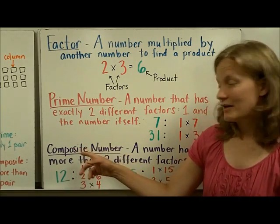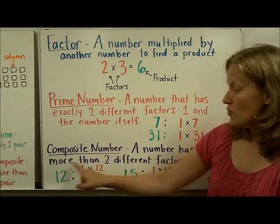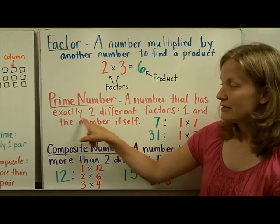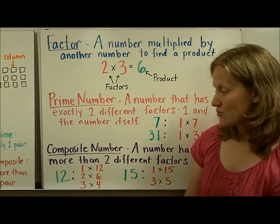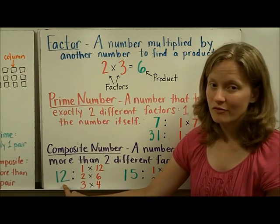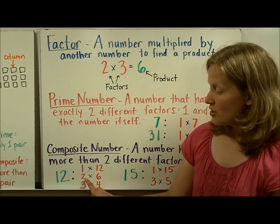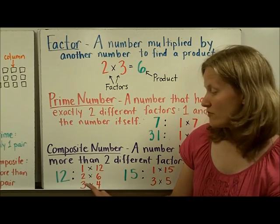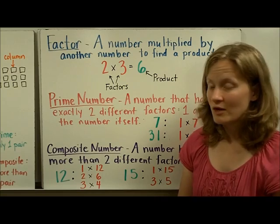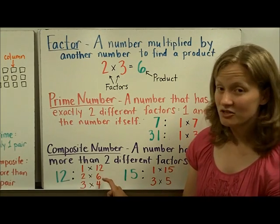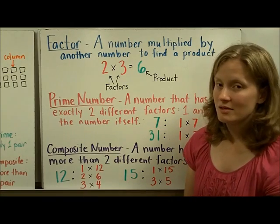On the other hand, a composite number is a number that has more than two different factors. Remember, a prime number has exactly two. A composite number has more than two. So let's look at 12 for example. We can do one times 12, but it equals 12, two times six equals 12, and also three times four equals 12. Because there are more than two factors here, 12 actually has six factors, that makes it a composite number.